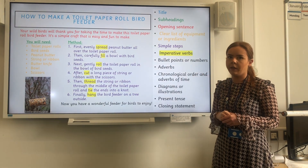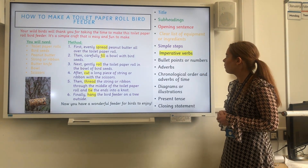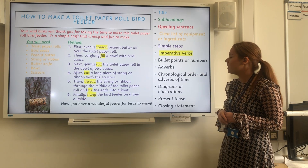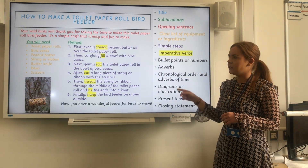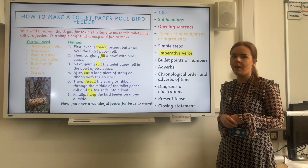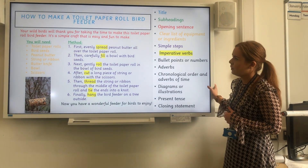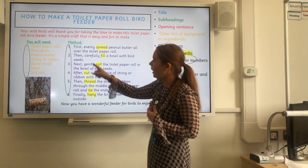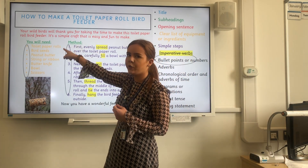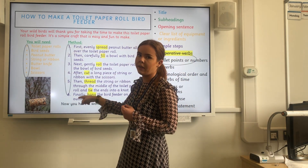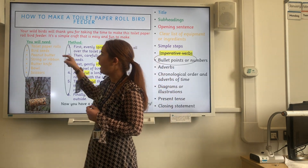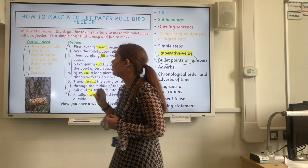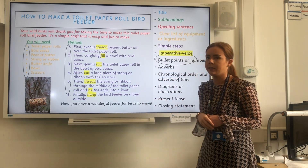The next feature we are going to be looking for is bullet points or numbers — anywhere in the text where you can see that, point to them. We have them here. Usually the method contains the numbers and the ingredients or list of what you will need will include the bullet points.